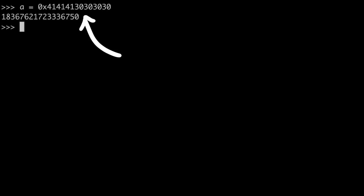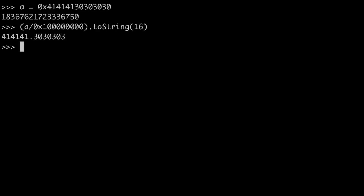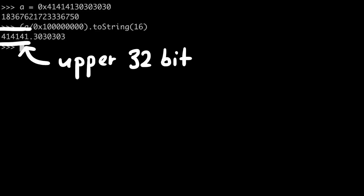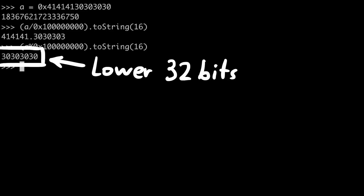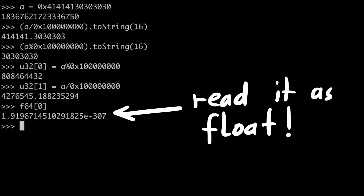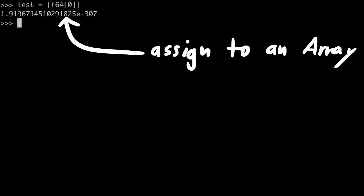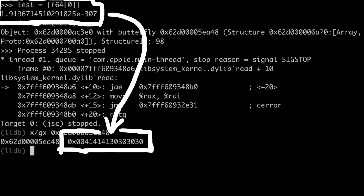We can of course combine them to get a nice big hex value. The reverse works basically in the same way. When you have a big integer like this one, you first have to split it into two 32-bit parts using some basic math: dividing it by the base gives you the upper part, and with modulo you get the lower part. Now that it's assigned to the integer array, you can read it out as a float again. And just for fun we can also assign this to a normal array and investigate the memory — and indeed we get exactly the hex value we wanted.